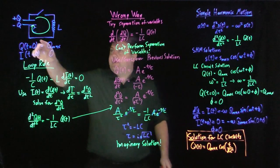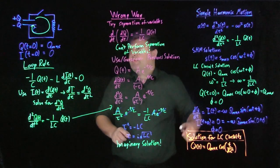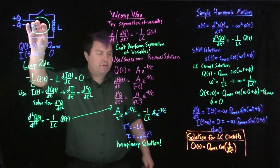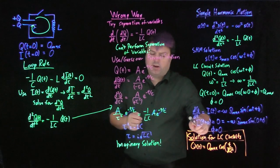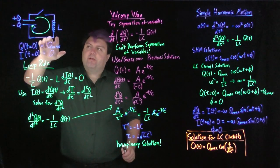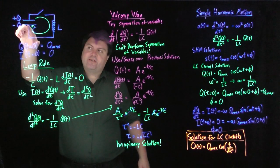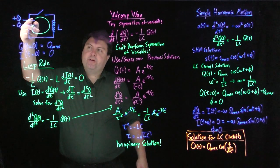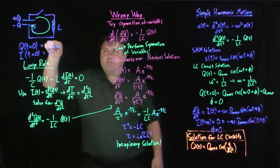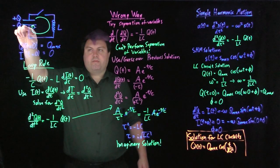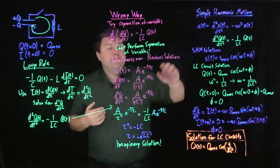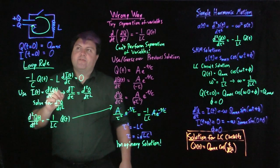This circuit acts like a simple harmonic oscillator. The charge starts in the capacitor and over time the capacitor fully discharges. At that moment, the derivative of charge — the current — is at its maximum. Eventually, the capacitor recharges with opposite polarity on its plates, then discharges again in the backward direction, continuing to oscillate. We've found another application of simple harmonic motion and solved our last differential equation circuit.